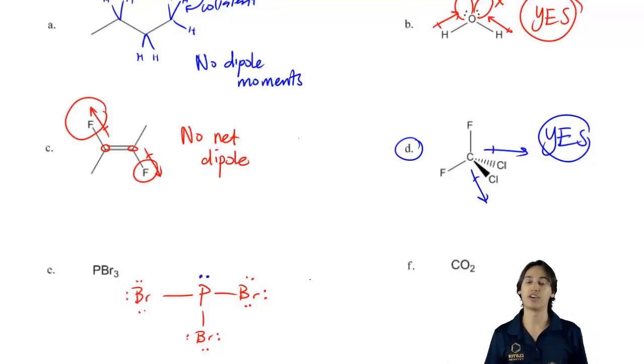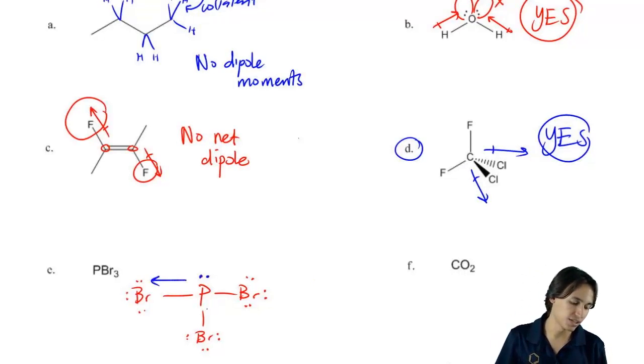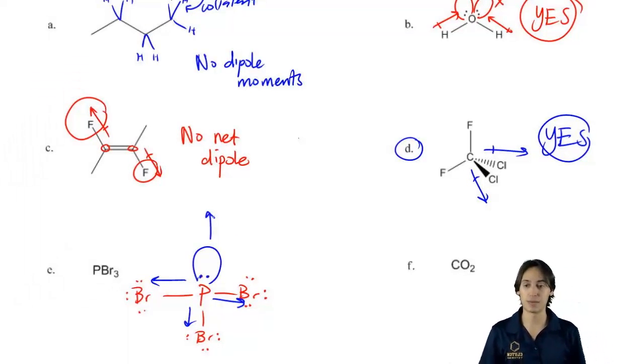Now what I want to do is see are there any dipoles and it turns out that I have so many lone pairs that this is going to be a disaster. There's going to be dipoles going everywhere. But what's important to note is that the bromines are going to be pulling in different directions and then I'm going to have a lone pair pulling in an opposite direction. Does that make sense so far?